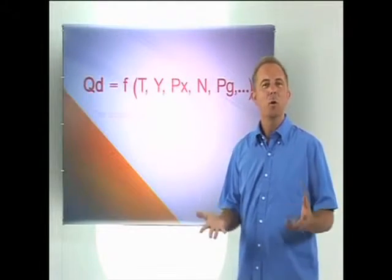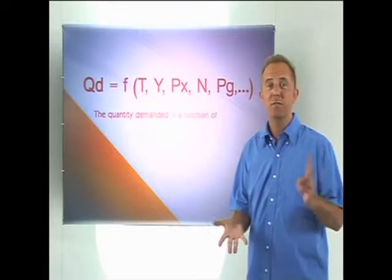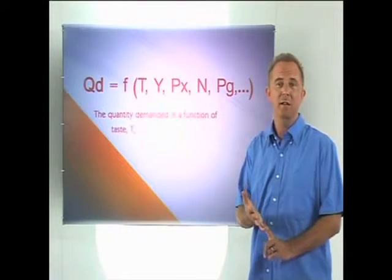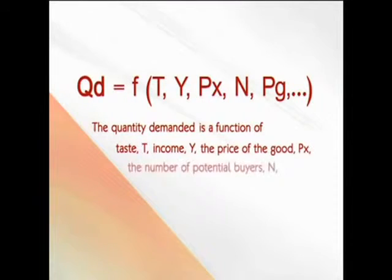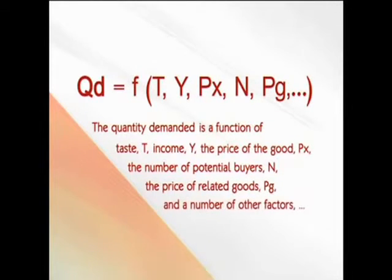So, there it is. The quantity demanded is a function of tastes and preferences, T, income, Y, the price of the good, PX, the number of potential buyers, N, the price of related goods, PG, and other factors, dot, dot, dot.